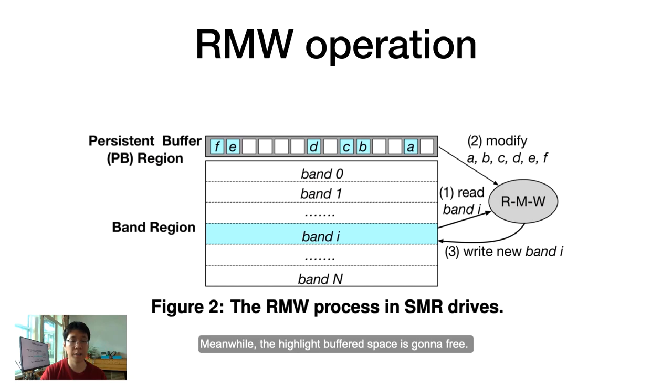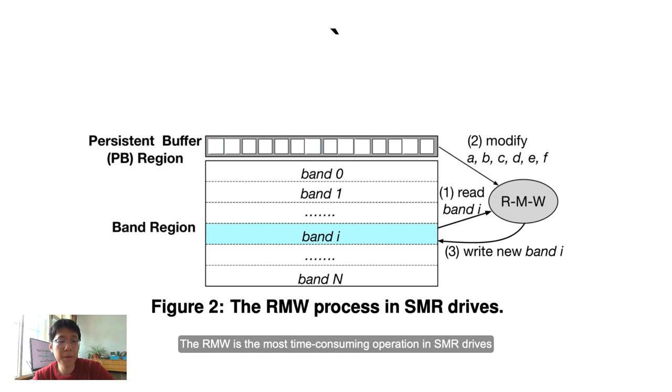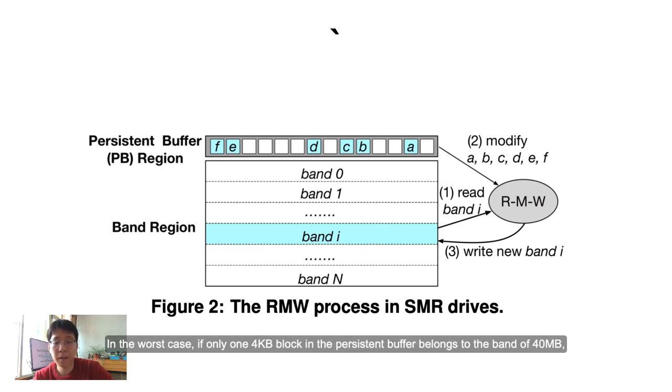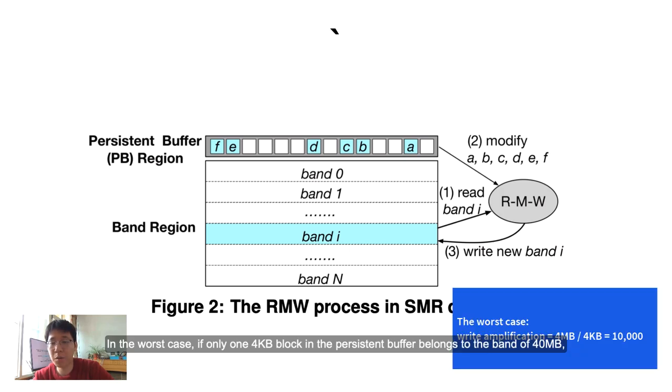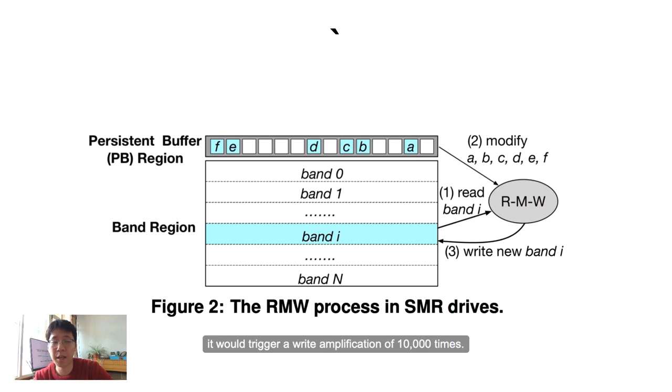The RMW is the most time-consuming operation in SMR drives. It results in so-called write amplification. No matter how big the amplification is, it will always trigger entire band reading and writing. In the worst case, if only one four kilobyte block in the persistent buffer belongs to a band of 40 megabytes, it would trigger amplification of 10,000 times.